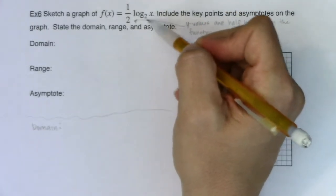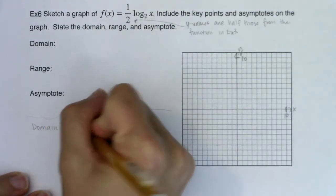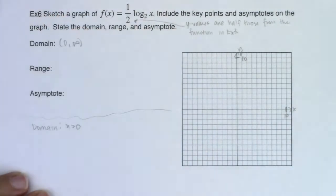I don't have a radical but I do have a logarithm so I need that argument of x to be greater than 0 so my domain is 0 to infinity.